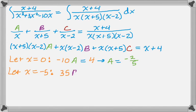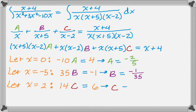X is negative 5 is going to give me 35B, and that's going to equal negative 1. So B is negative 1 over 35, which again is what I got with the cover-up method. And then if I let x equal 2, I end up with just 14C on the left, and I end up with 6 on the right, so C is 3 sevenths.